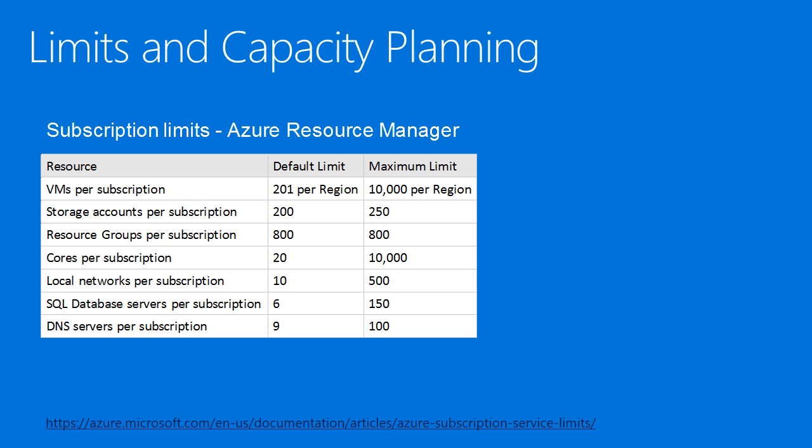Here are some of the limits and capacities to think about — just a short list, but there's a very long detailed list linked at the bottom covering networking, storage, and compute. These subscriptions have a lot of capacity. For VMs, you can have 10,000 running in the same region. You can have 250 storage accounts, and a single storage account can hold up to 500 terabytes. Resource groups can have 800 separate ones in your subscription.